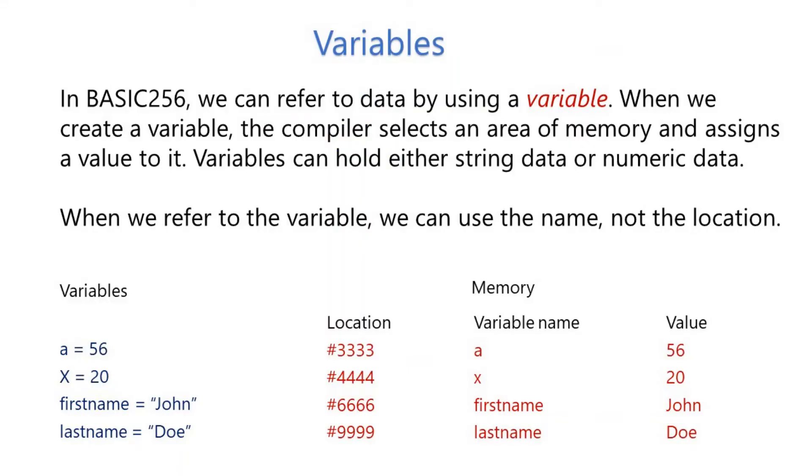Variables in BASIC-256. We can refer to data by using a variable. When we create a variable, the compiler selects an area of memory and assigns a value to it. Variables can hold either string data or numeric data.